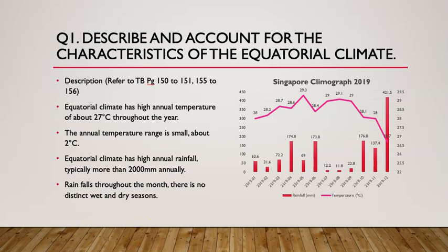Let's break it down first. This question has two parts. The first part is 'describe' and the second part is 'account for'. For such a question, you have to answer the description first. What you are seeing now is the description for a climograph of Singapore in 2019.